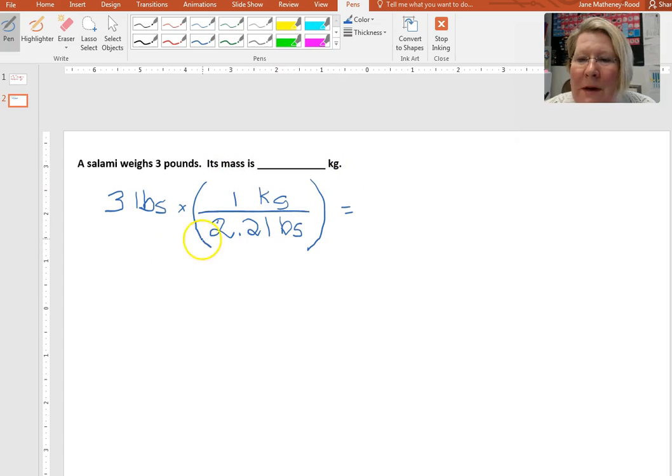So we have to know how many pounds there are in a kilogram. So we look that up in a table and we find that there are 2.2 pounds per 1 kilogram. So if we take 3 pounds times 1 divided by 2.2, we end up with 1.36 kilograms.